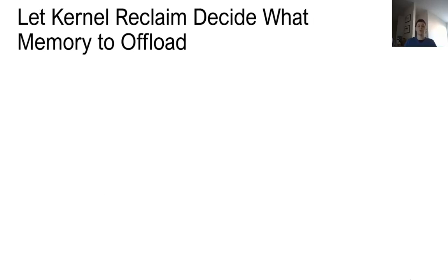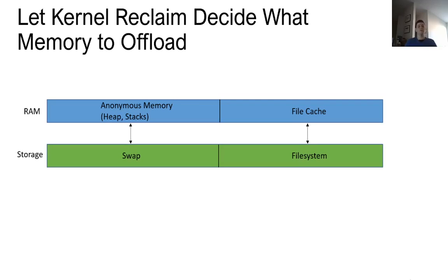The next component is kernel reclaim. One thing we have to do is figure out what memory to offload. Scanning page tables is compute-intensive, but the kernel already maintains LRU lists of all memory in the system and knows how to offload to both file system and swap, corresponding to file cache and anonymous memory. Our thought was to reuse the kernel reclaim algorithm to periodically reclaim, keeping everything in LRU order so only cold memory gets reclaimed. In practice though, we found very heavy thrashing on file cache where pages were getting dumped and having to be faulted back in, while anonymous memory and swap weren't touched at all.